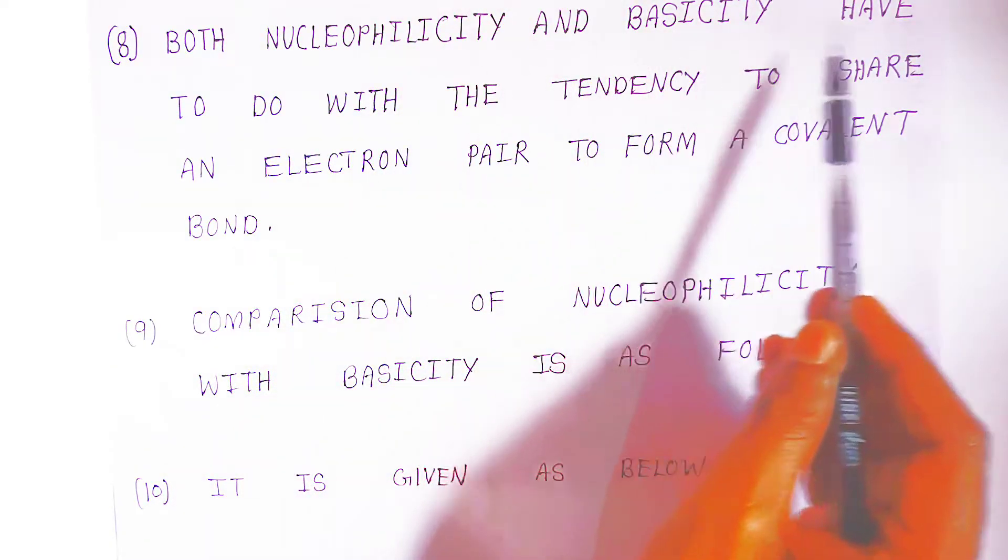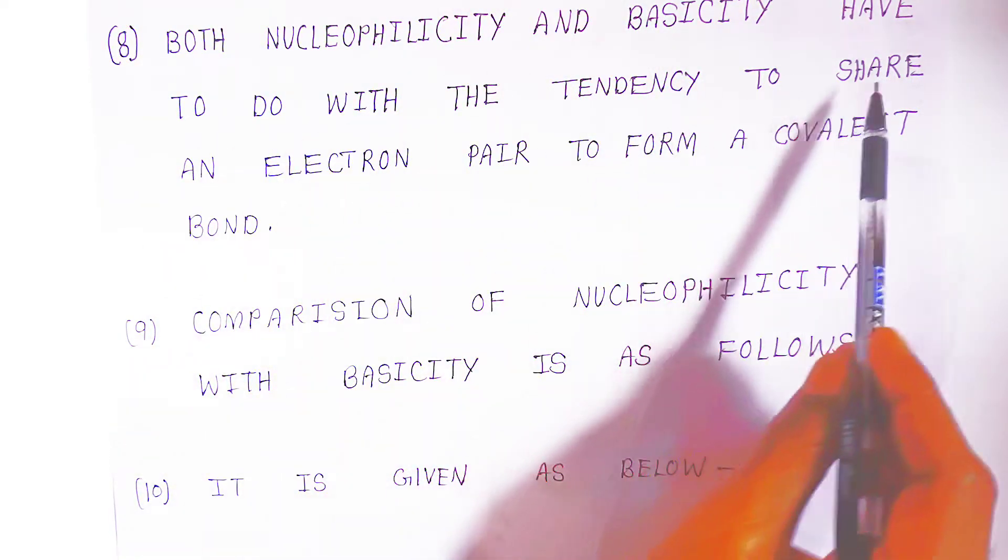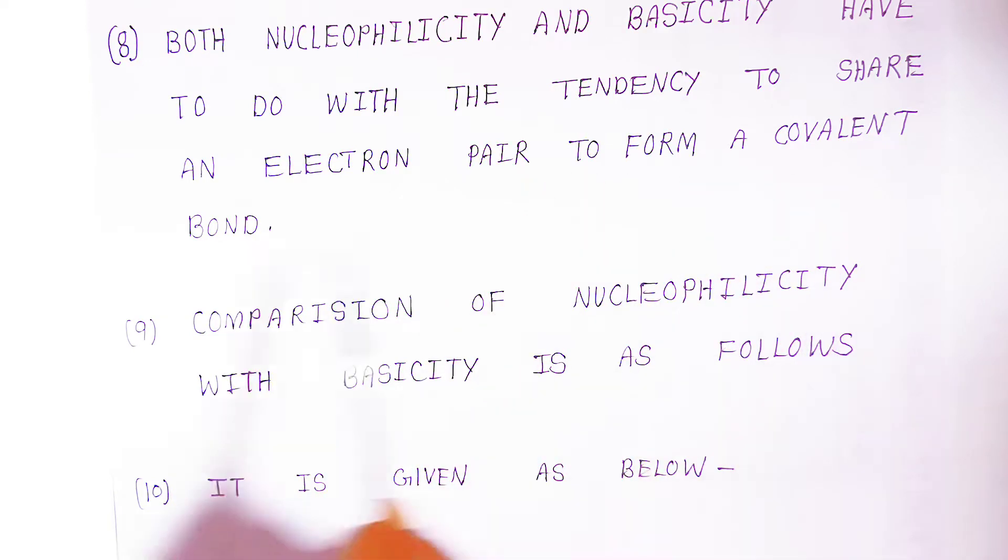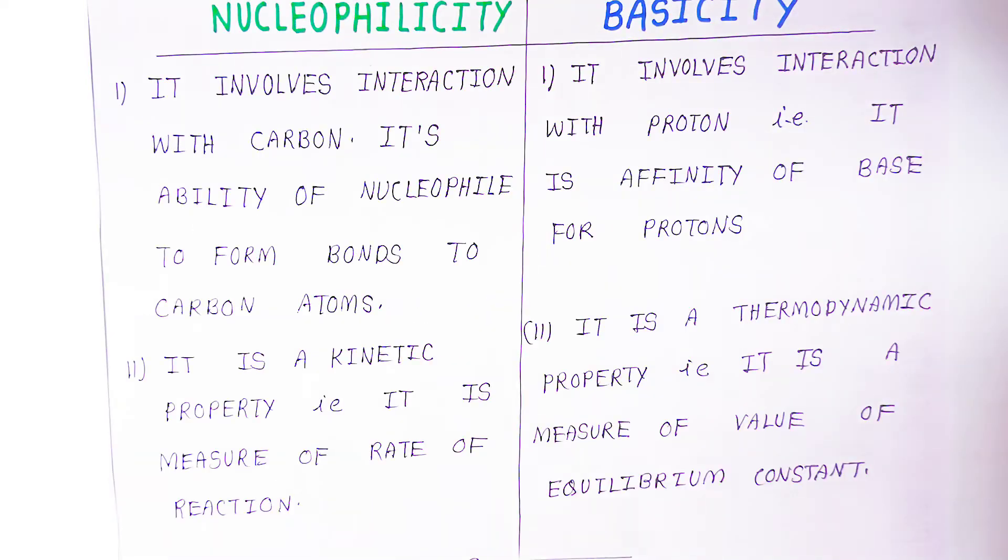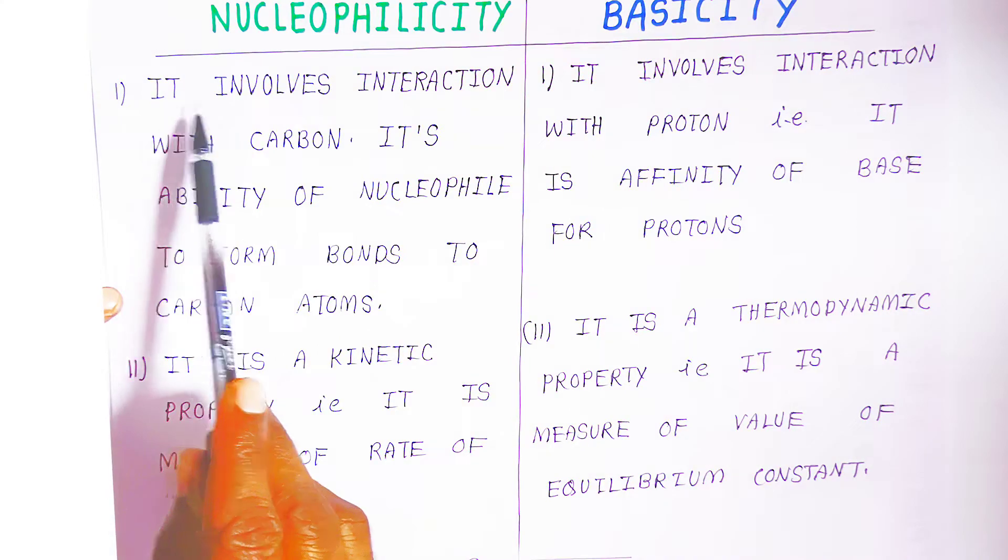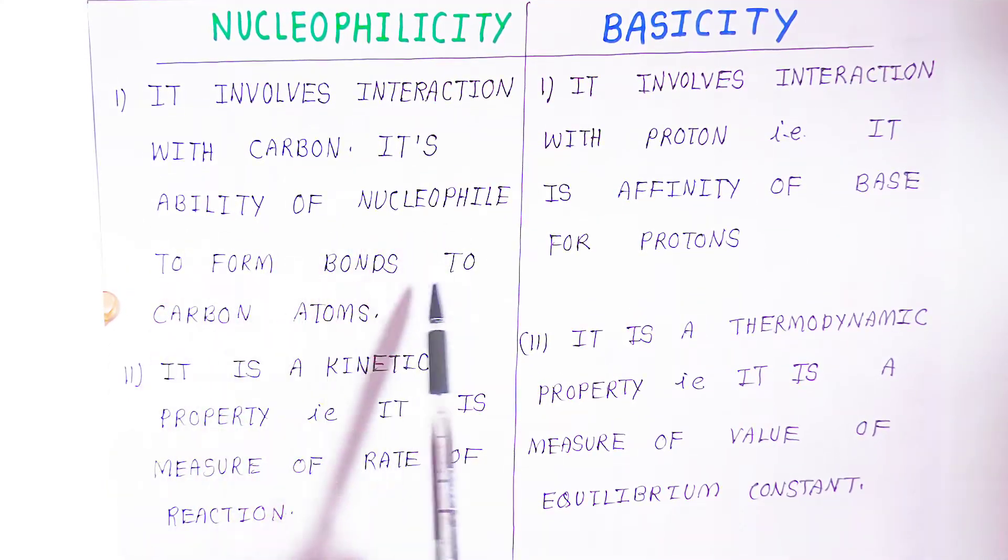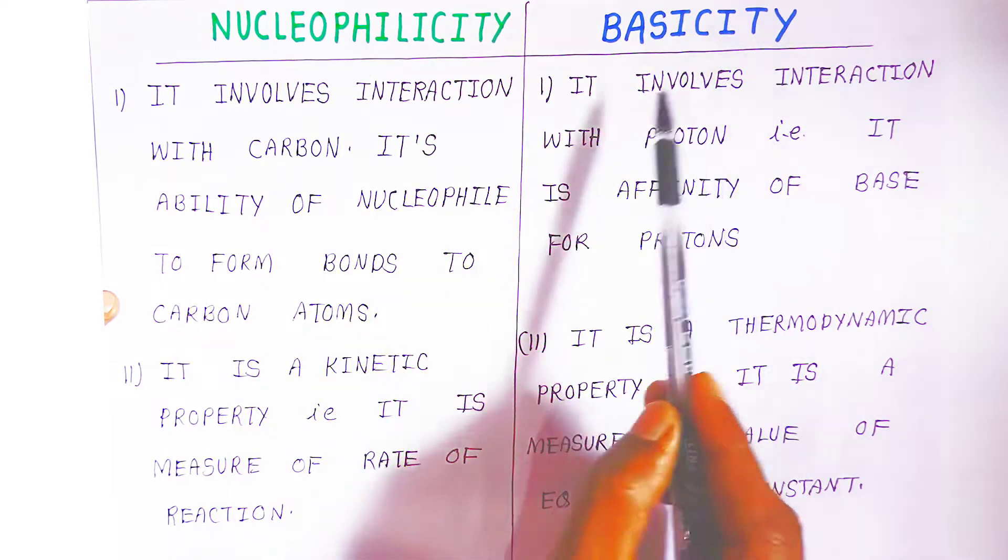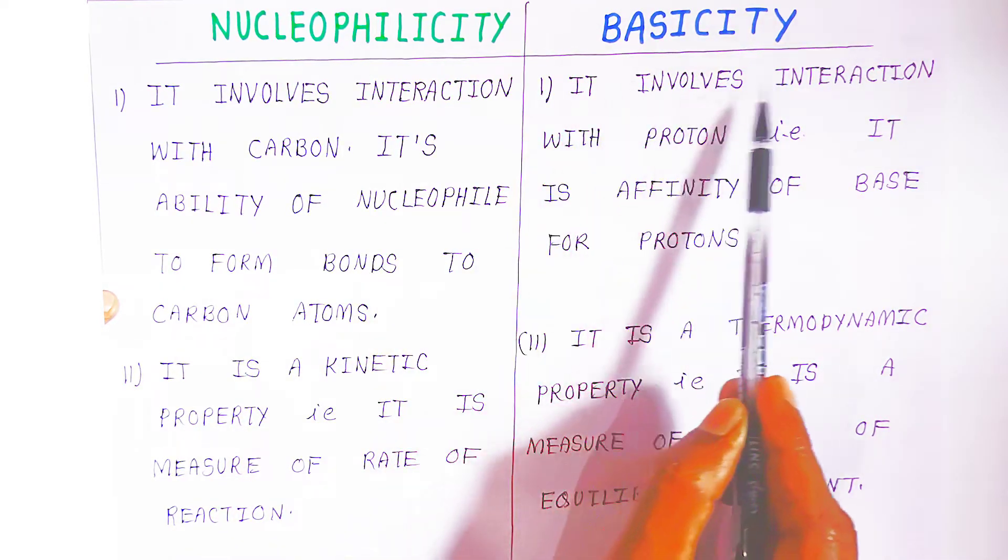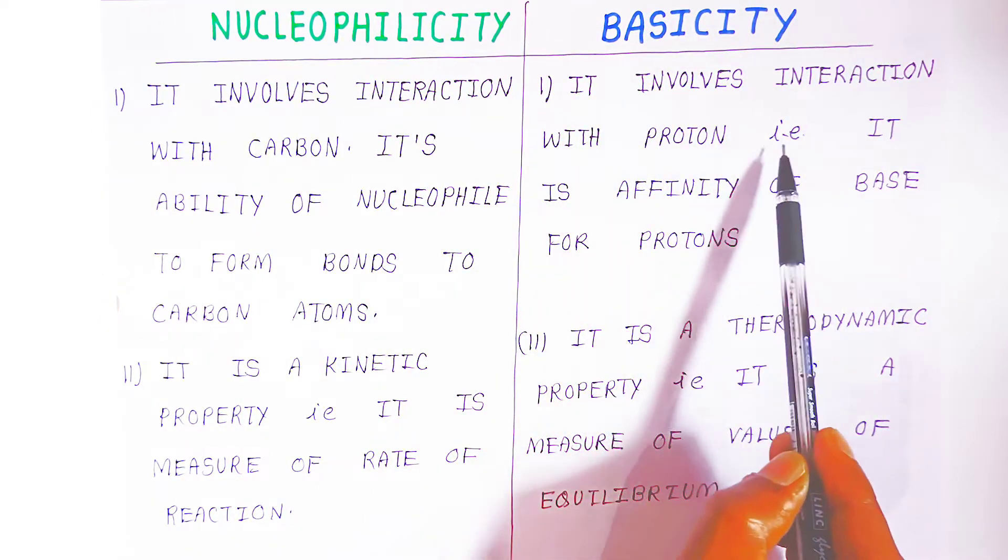Both nucleophilicity and basicity have to do with the tendency to share an electron pair to form a covalent bond. Comparison of nucleophilicity with basicity is as follows. First comparison: it involves interaction with carbon - its ability of nucleophil to form bond to the carbon atom only.